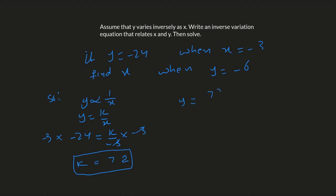The equation will be y equals 72 over x. Now we have to find x when y equals negative 6, so plug in y equals negative 6: negative 6 equals 72 over x. By cross multiplication, negative 6x equals 72. Divide negative 6 on both sides, so x equals negative 12.